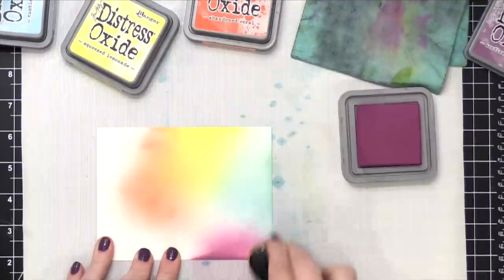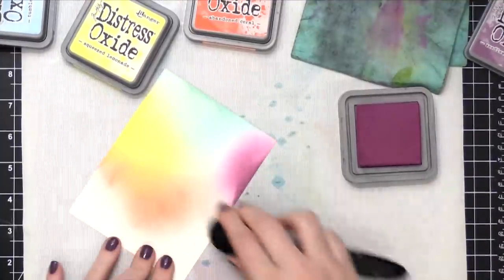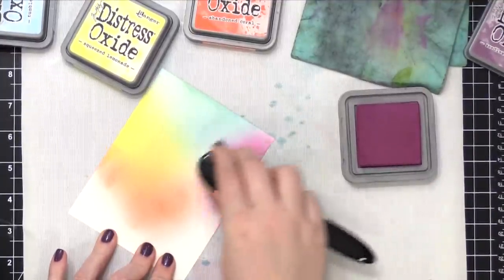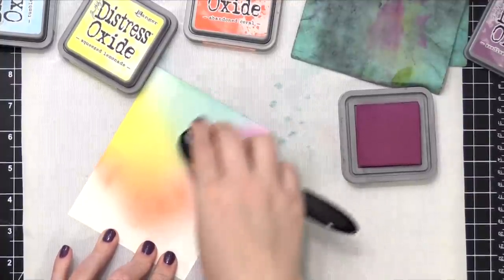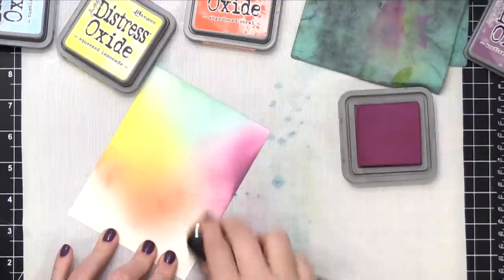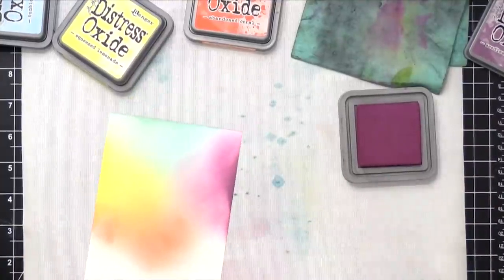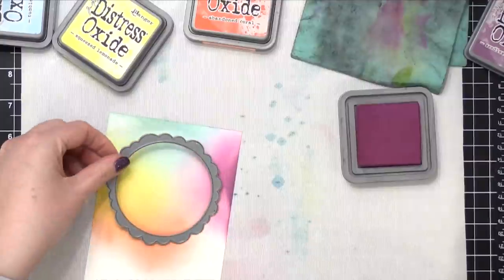But you'll notice as I come in, it seems to really saturate the edge of my cardstock. Either that or this is just a really intense color. So I started blending that in, and my idea behind this blended piece is I'm actually going to use a die cut to cut out a circle.